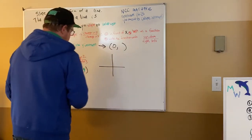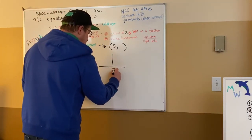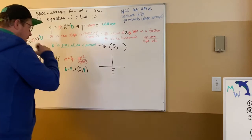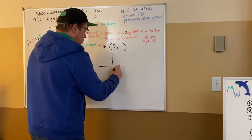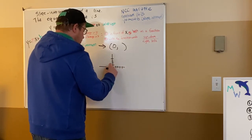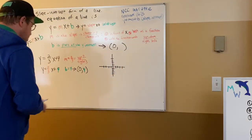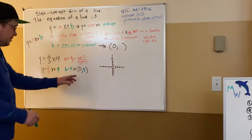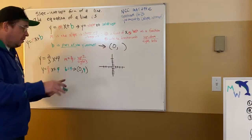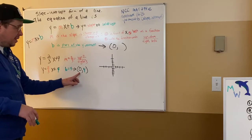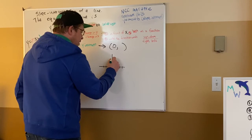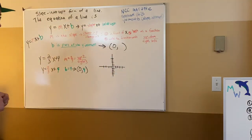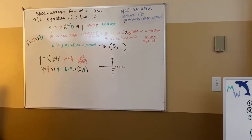b equals four — that's not enough on its own. What I need is an ordered pair with zero as the first coordinate. In this particular line, b is four, so the y-intercept is zero comma four. I'm ready to graph. I go to zero-four, which is nothing across and positive four up on the y-axis. It's called the y-intercept because it's a point on the y-axis that this line passes through.